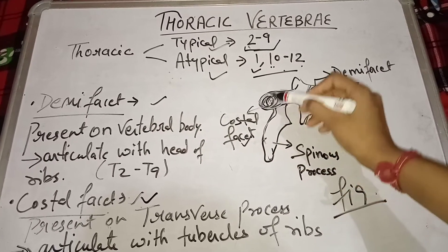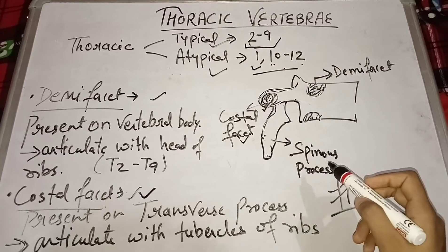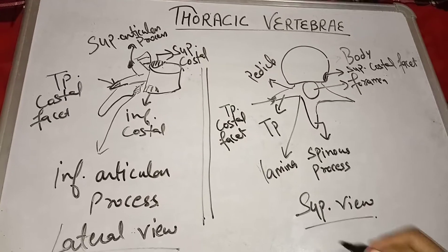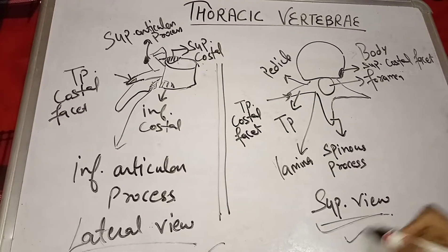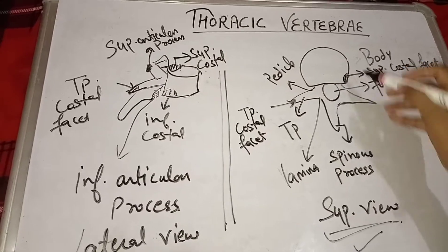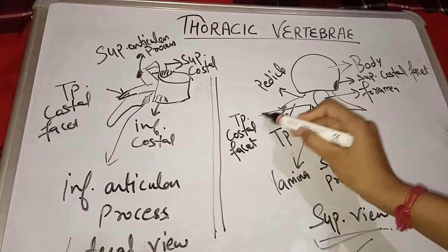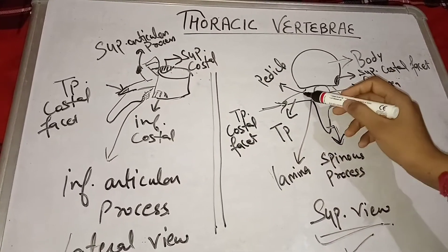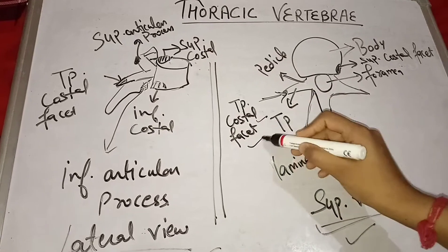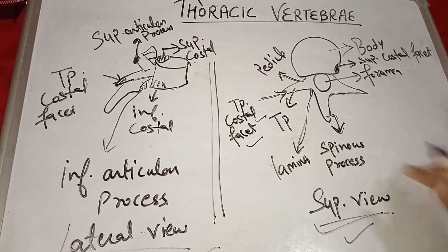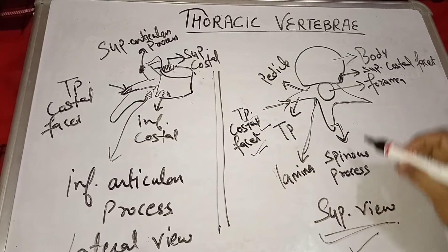This is the transverse process and this is the spinous process, as you can see clearly. The costal facet is present on the transverse process, which articulates with the tubercle of the ribs. Now let's see the superior view of the thoracic vertebra. Here you can see the body of the thoracic vertebra, the spinous process, the transverse process, the pedicle, and lamina. There are two types of costal facet present: transverse costal facet on the transverse process and superior costal facet.